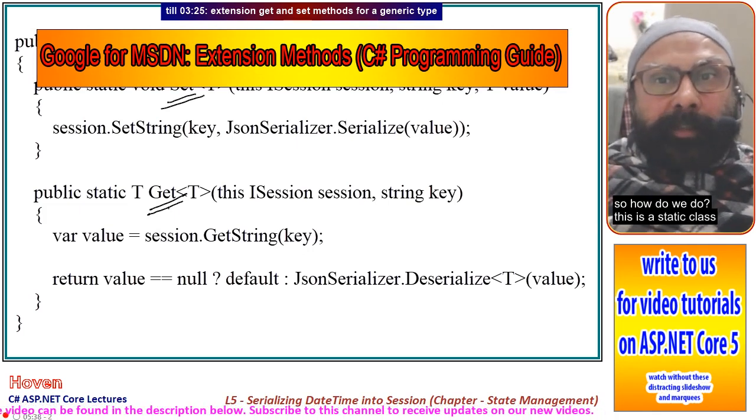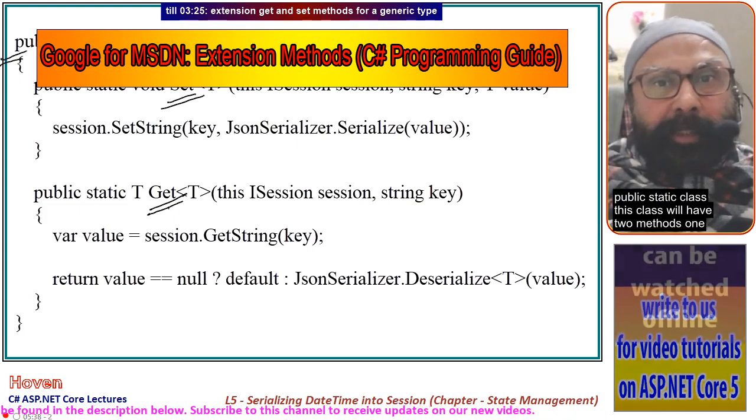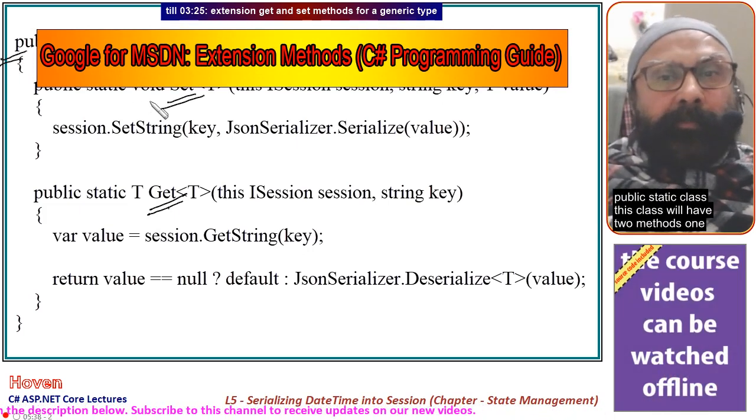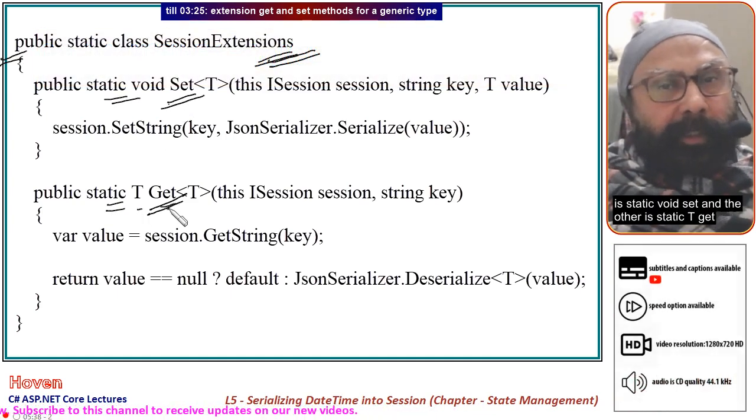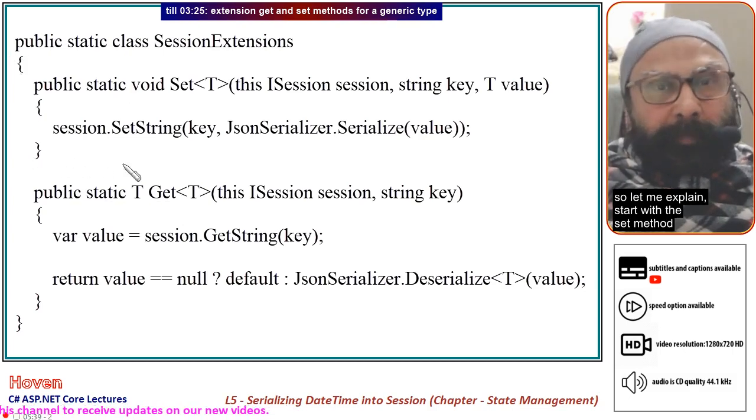This is a static class, public static class. This class will have two methods. One is static void Set and the other is static T Get. So let me explain. Start with the set method.